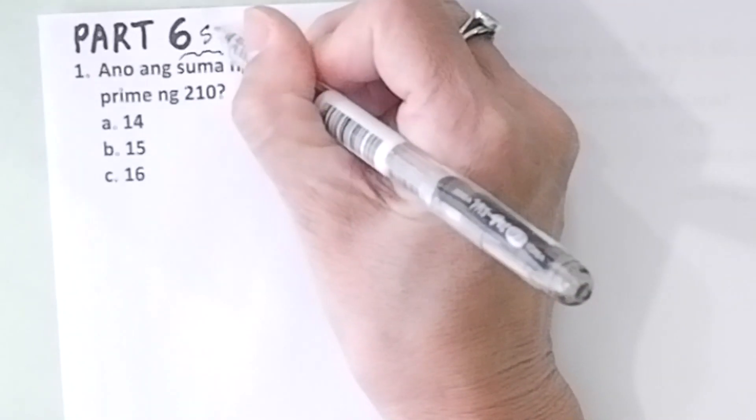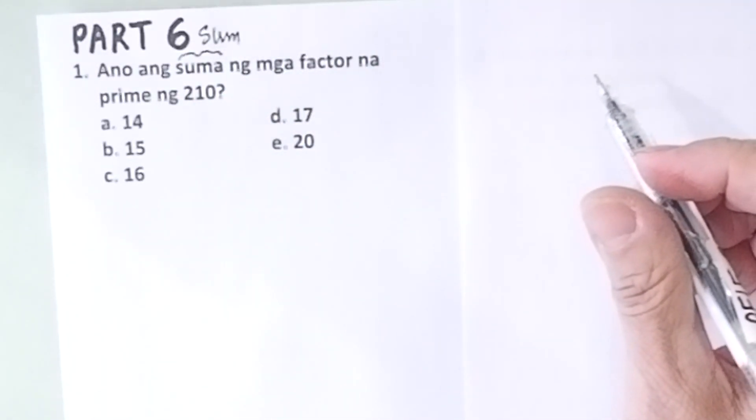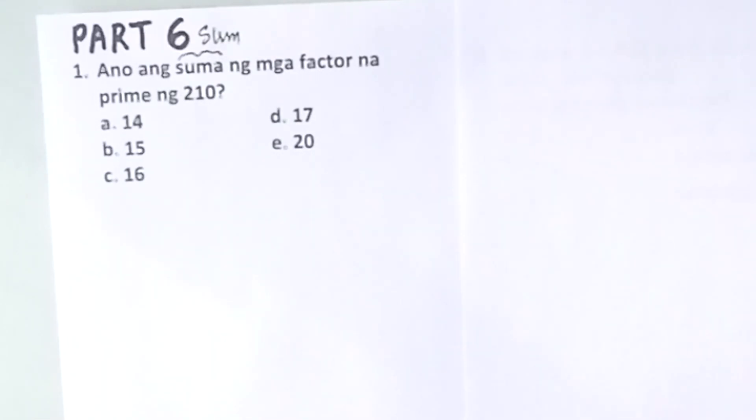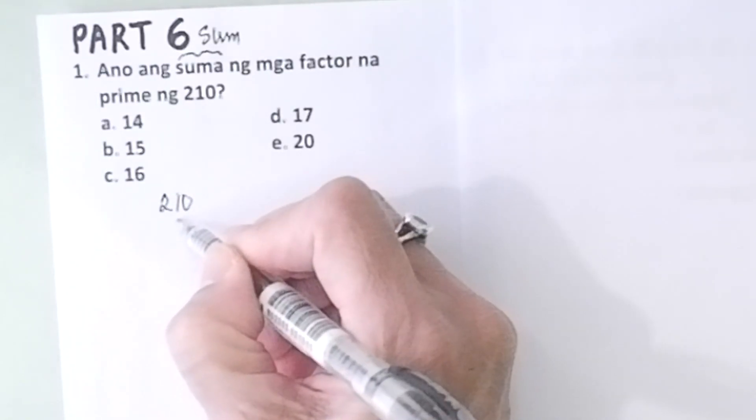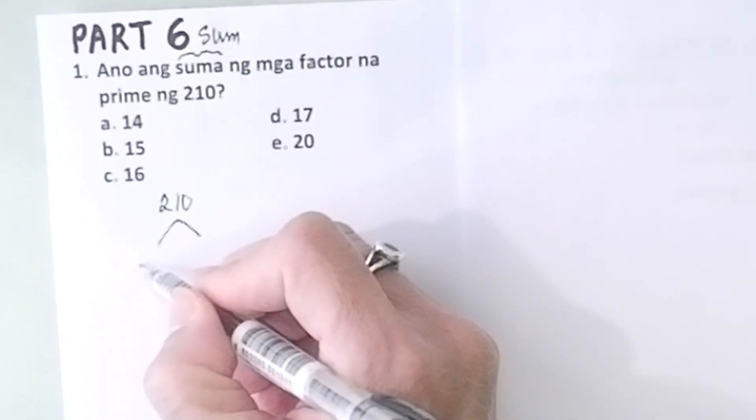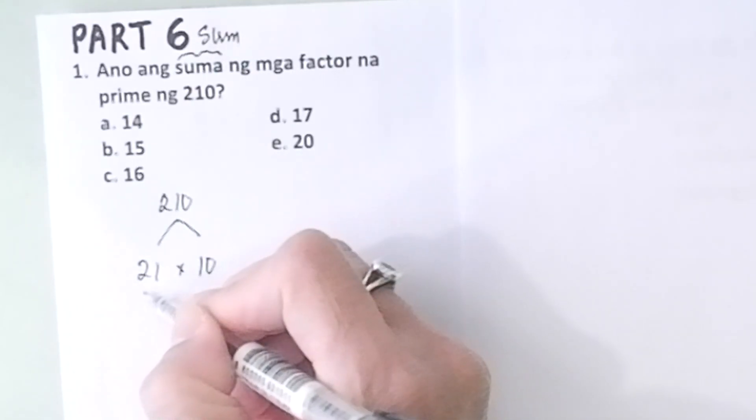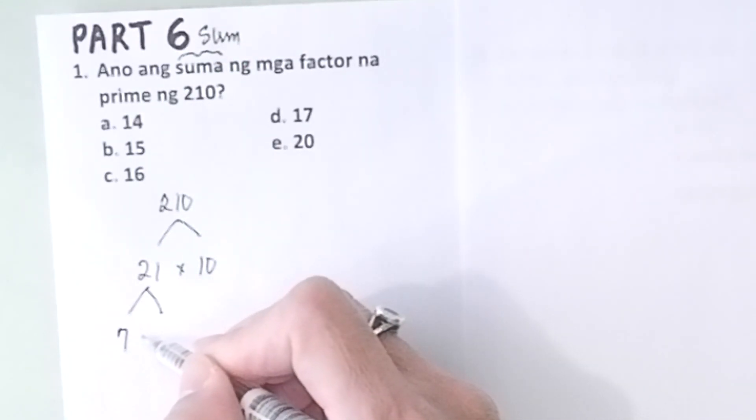Translation: What is the sum of the factors, or the prime factors of 210? So we get the prime factors. 210 is equal to 21 times 10, but 21 is not prime because it has other factors.